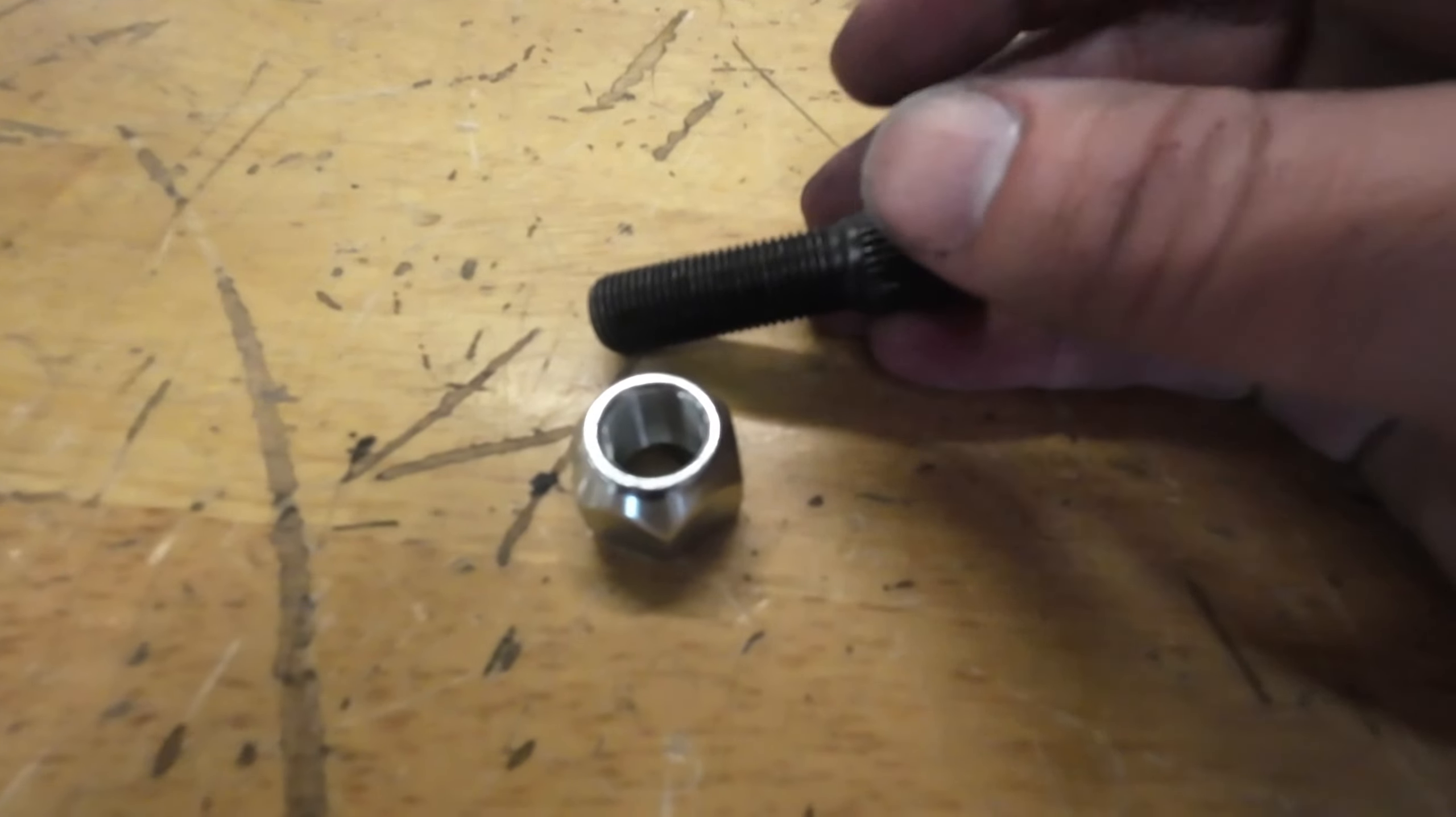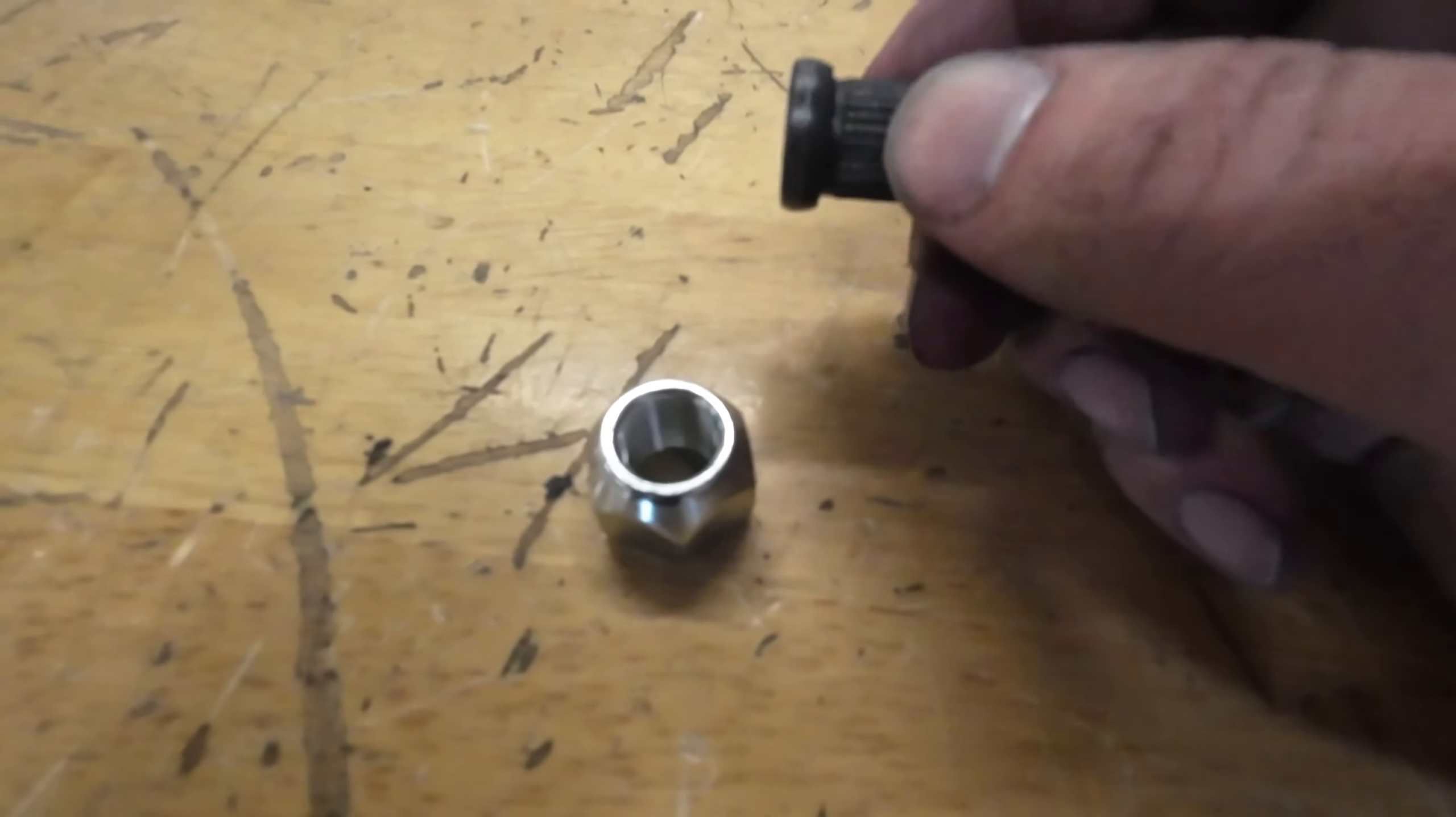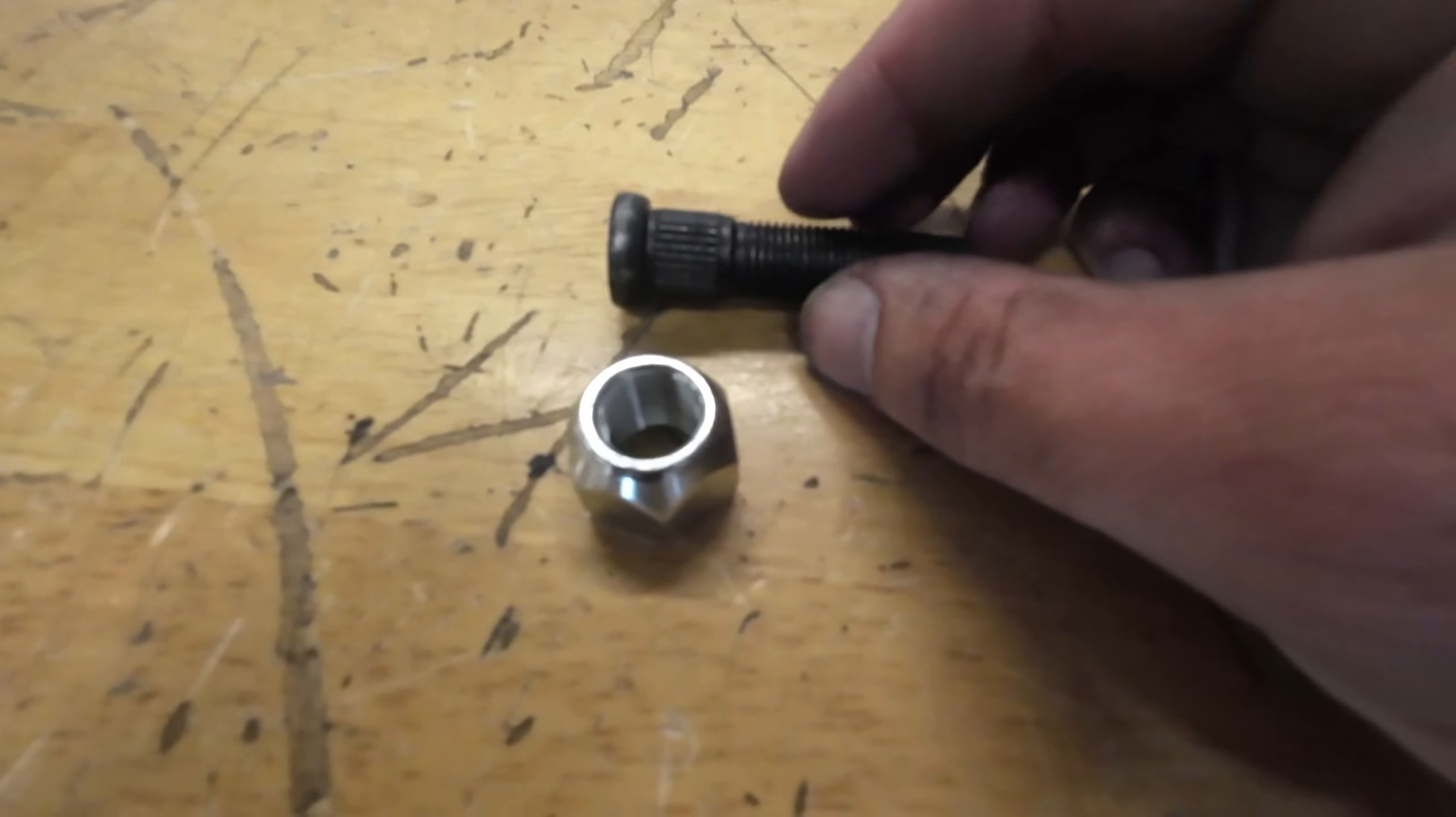So you'll see these a lot on 2,000 pound, 3,500 pound axles, 5,200s, 6,000s, and 7,000 pound axles.